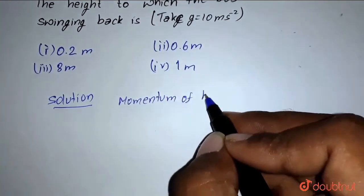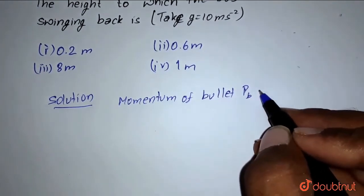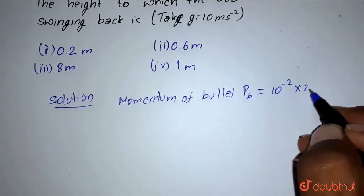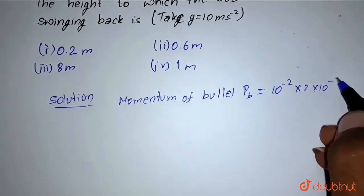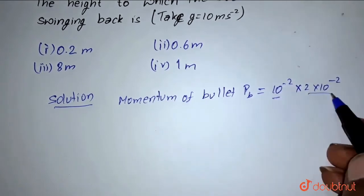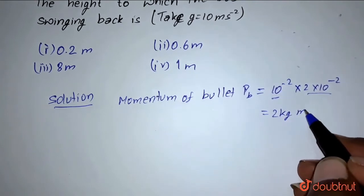Momentum of bullet Pb equals 10^-2 × 2 × 10^2. This is the mass of the bullet and this is the velocity of the bullet. That equals 2 kilogram meter per second.